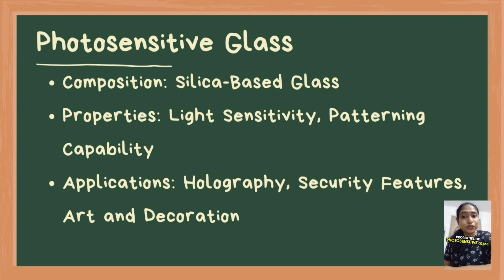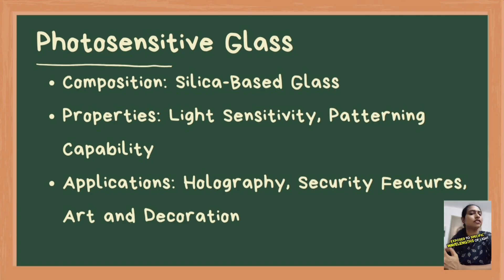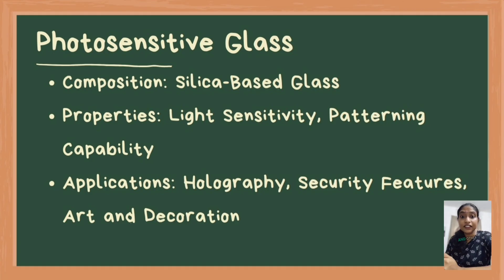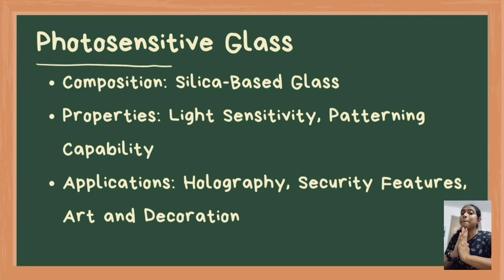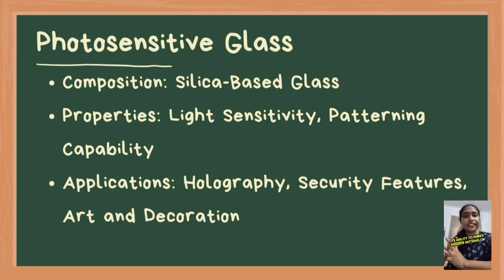Photosensitive glass is a unique type of glass that changes its properties when exposed to specific wavelengths of light, particularly ultraviolet (UV) light. It is typically a silica-based glass containing trace amounts of silver and other sensitizing agents. This glass can be selectively exposed and developed to create intricate patterns or images, making it useful in applications such as holography, security features, and decorative art. Its ability to embed hidden patterns or images that are only visible under certain lighting conditions adds an additional layer of functionality.